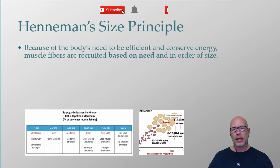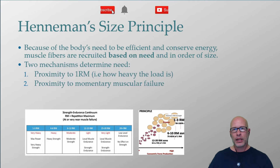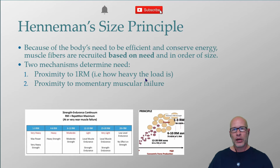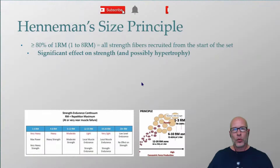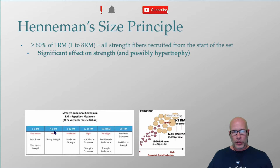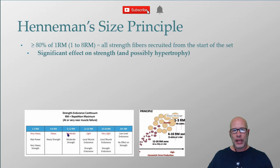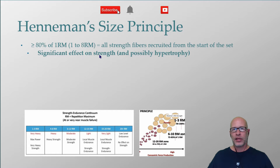There are two mechanisms that determine how many muscle fibers your body needs to recruit: one is how heavy the load is — the heavier the load, the more fibers needed, or in other words, how close you are to your one rep max. The other is how close you are to muscle failure. When you're in the one-to-eight repetition range, which is 80% or greater of your one rep max, because of the load, all strength fibers need to be recruited from the start of the set, and you'll have a significant effect on your strength.